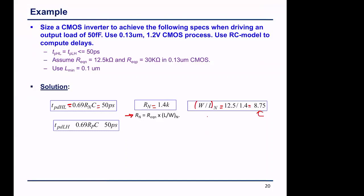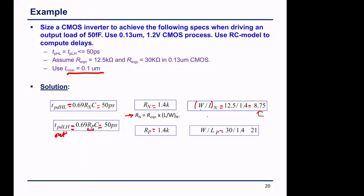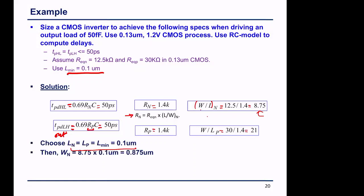For a symmetric inverter — symmetric low-to-high and high-to-low propagation delay driving the same load — we set TP_HL equal to TP_LH. This means 0.69·RN·C equals 0.69·RP·C. Since the load is the same, we cancel C from both sides, giving RN equal to RP. Therefore 12.5k × L/WN equals 30k × L/WP, and we can find WP/WN.